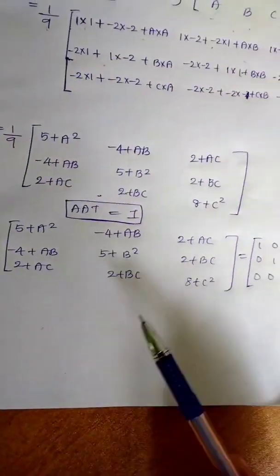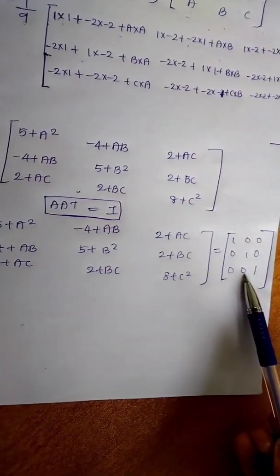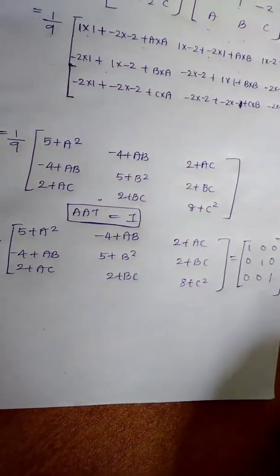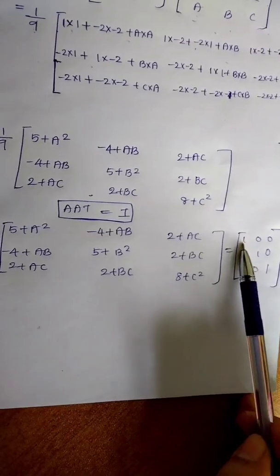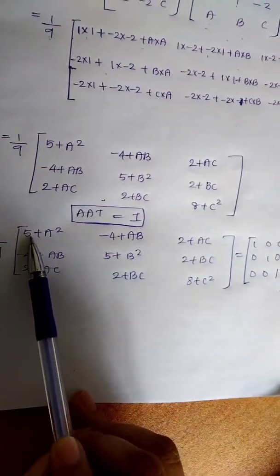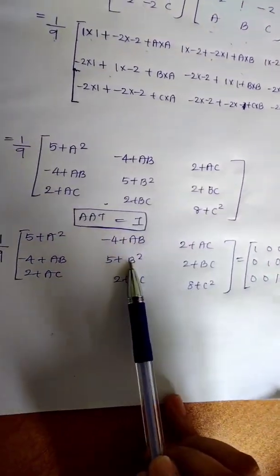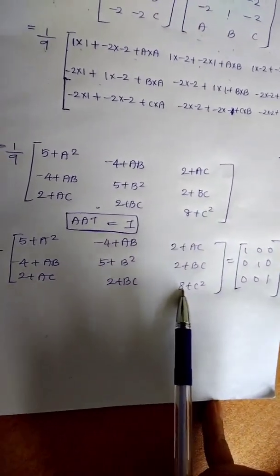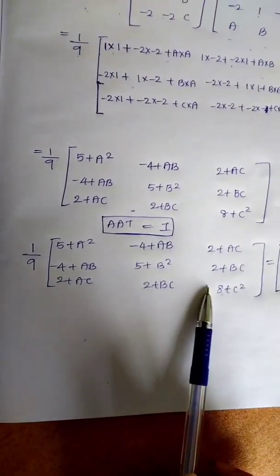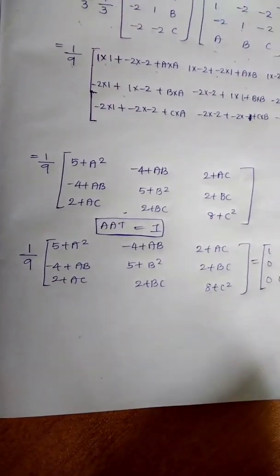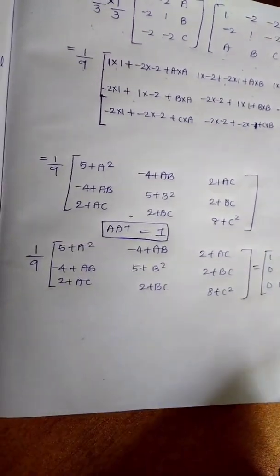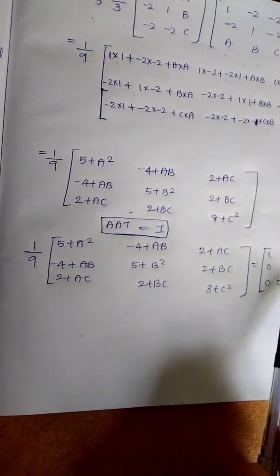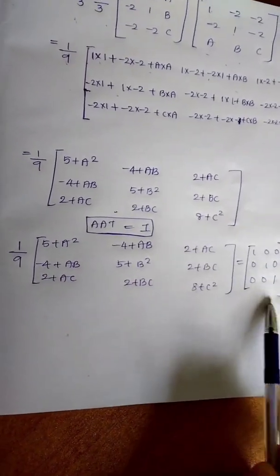We have to write equal to I. We write 1 on the diagonal and 0 elsewhere in the identity matrix. The 1 on the diagonal corresponds to 5 plus A squared, the next 1 corresponds to 5 plus B squared, and the next 1 corresponds to 8 plus C squared. The other terms are equal to 0. So the equations are: 5 plus A squared equals 1, 5 plus B squared equals 1, and 8 plus C squared equals 1.